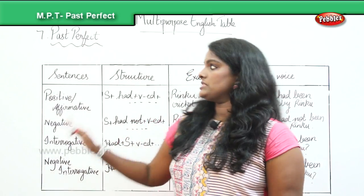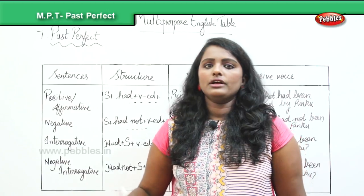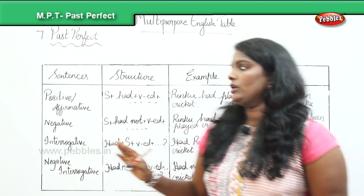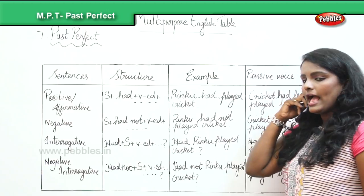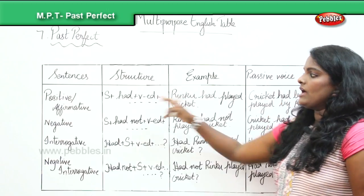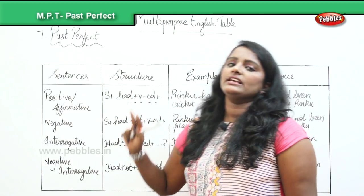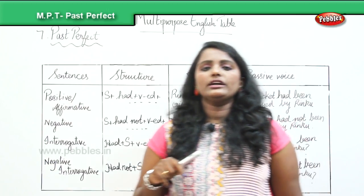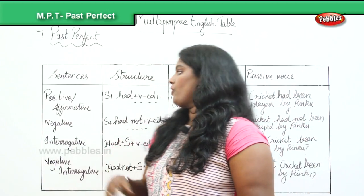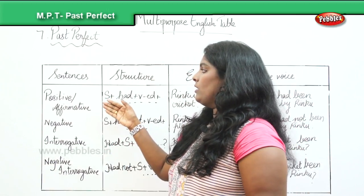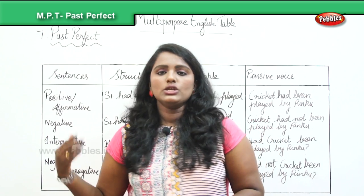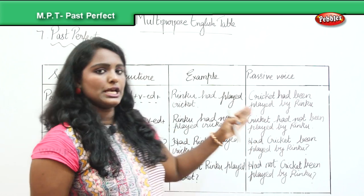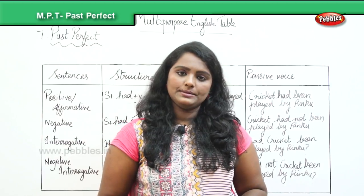This is the structure or the multi-purpose table for the past perfect tense. All you need to keep in mind is to have had and the ed form of the verb when you convert the sentences from one type to another, or while you convert the same to the passive voice.